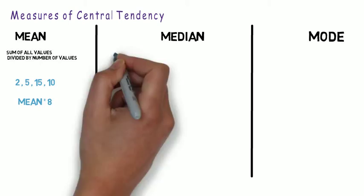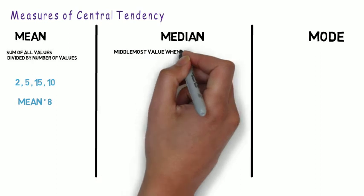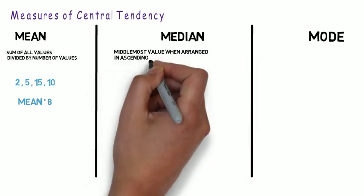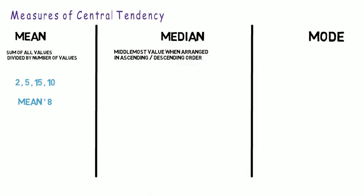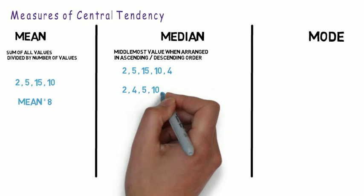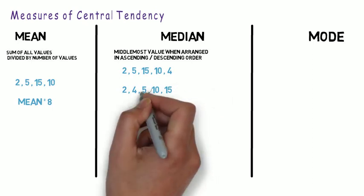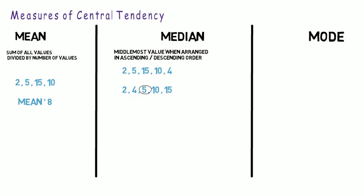Next, we come to Median. Median is basically the middlemost value when we arrange the given numbers in ascending or descending order. So if I give you 5 numbers — 2, 5, 15, 10, 4 — first arrange them in ascending order: 2, 4, 5, 10, 15. The middlemost value is the median. Here it is 5, since it has 2 values both to its right and to its left. But this rule is only applicable when the number of values is odd.